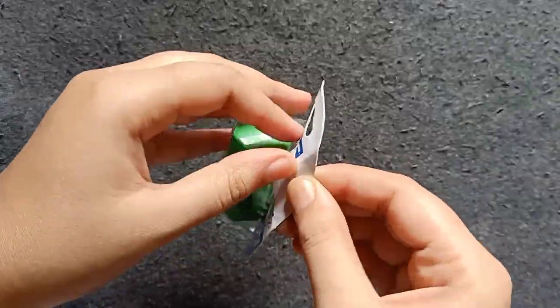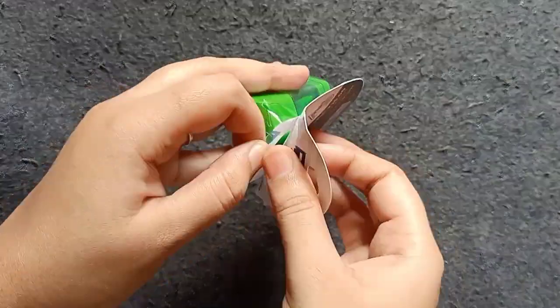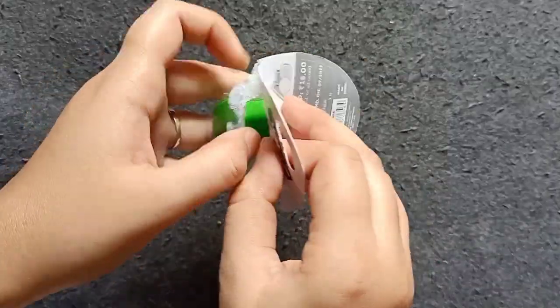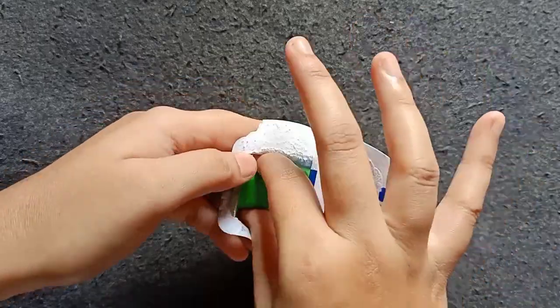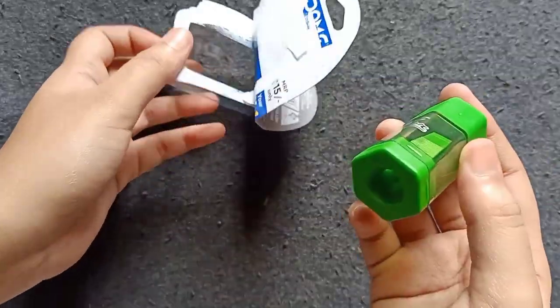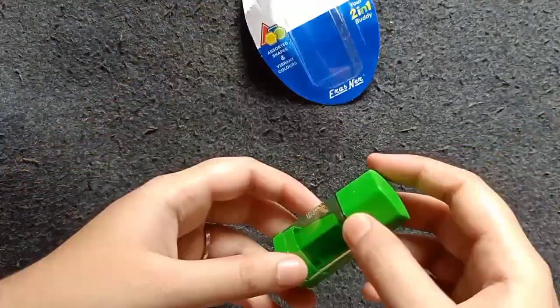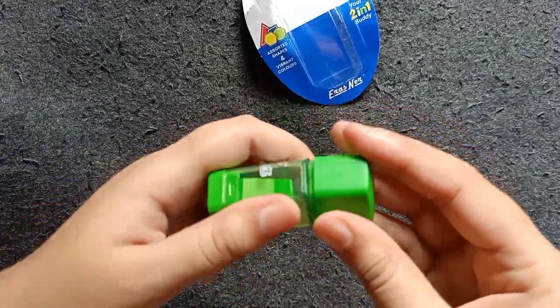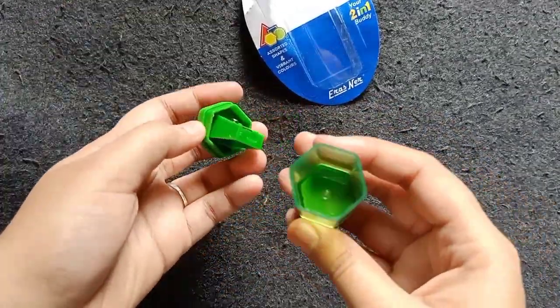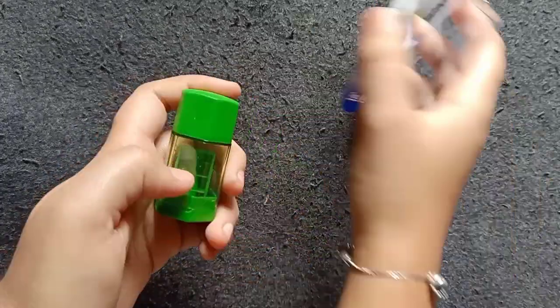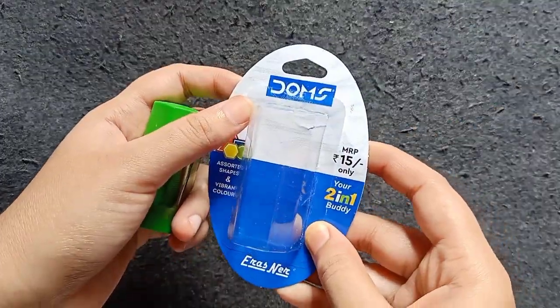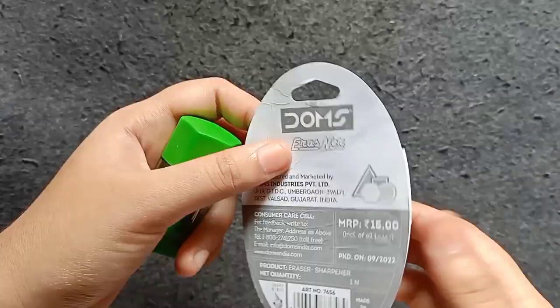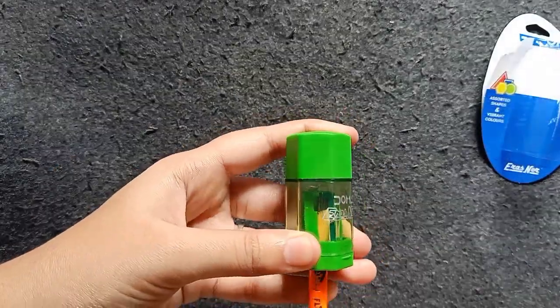Next is Doms 2-in-1, sharpener plus eraser. This is 15 rupees. You can use it for multiple purposes. One side is an eraser, and there's a sharpener here, so you have it in 2-in-1.